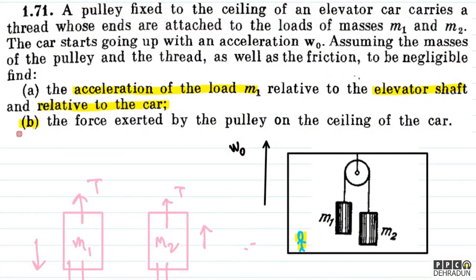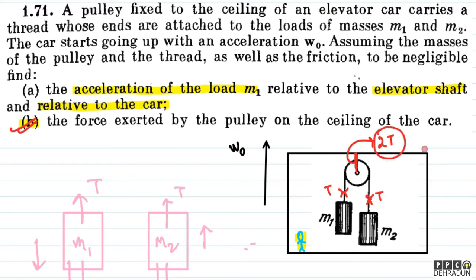Now for the second part: the force exerted by the pulley on the ceiling of the car. The pulley is pulling the ceiling downward. The force equals twice the tension (2T), since both sides of the thread pull on the pulley. The direction of this force is downward, same as the direction of acceleration due to gravity g_vector.